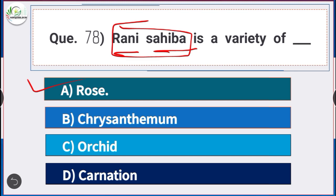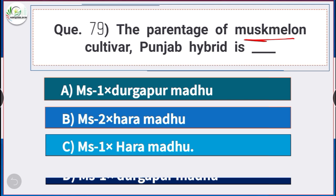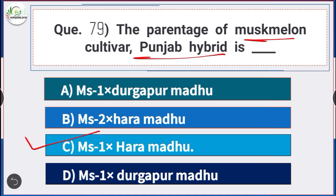Question number 79: The parentage of muskmelon cultivar Punjab Hybrid is — answer option C — MS1 × Haramadhu. The parentage of muskmelon cultivar Punjab Hybrid is MS1 and Haramadhu.